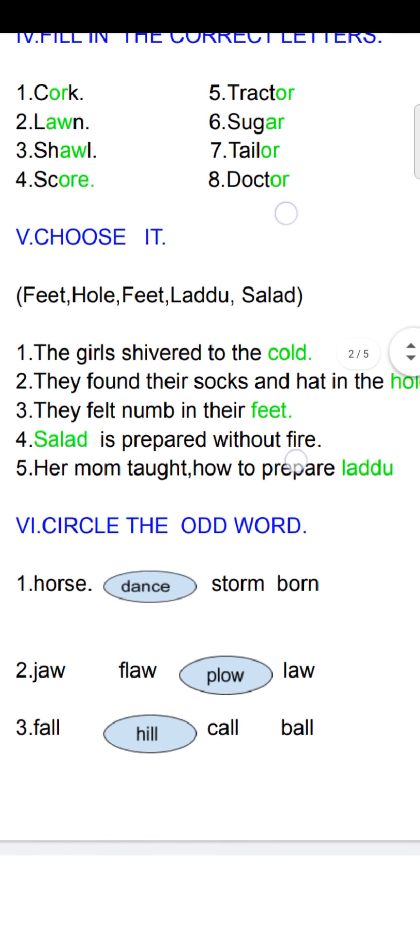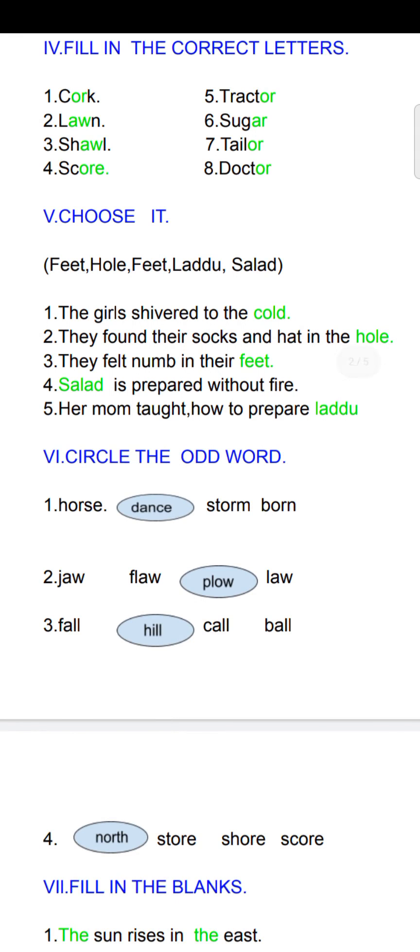Next, Roman five: choose it. Here, answers are given in a bracket. You have to select the correct one and write. First: the girls shivered in the cold. Second: they found their socks and hat in the hole. Third: they felt numb in their feet. Fourth: salad is prepared without fire. Fifth: her mom thought how to prepare laddu.